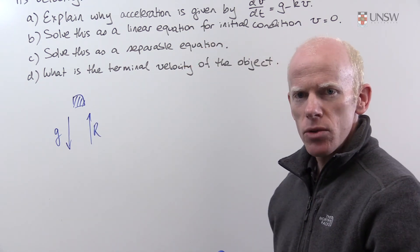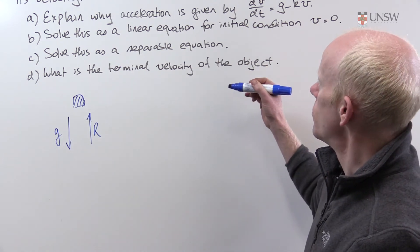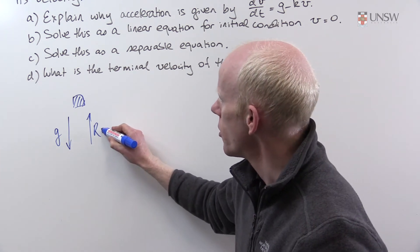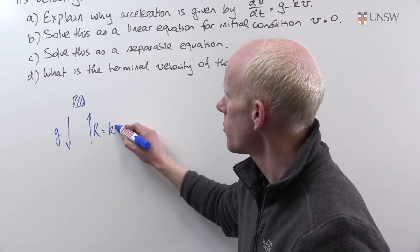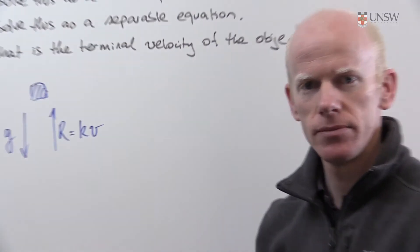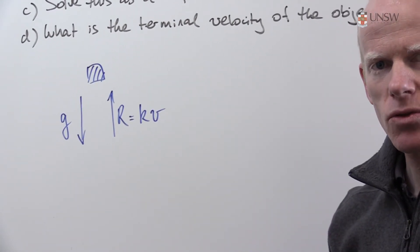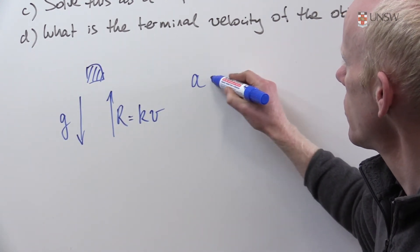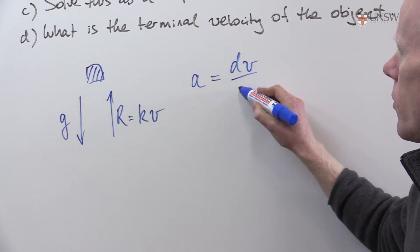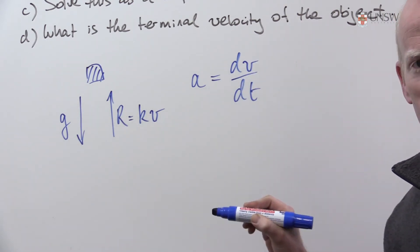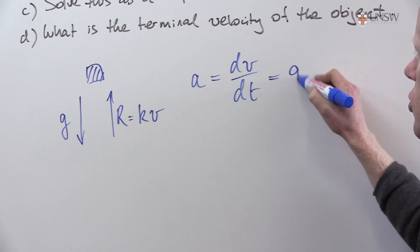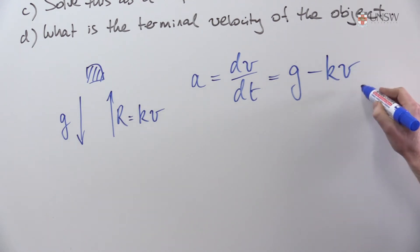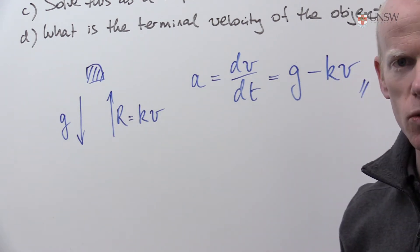In part A, the resistance is defined to be proportional to velocity, so we can define R to be some constant times v. Let's write the equation of the forces. We have the acceleration which is defined to be the rate of change of velocity with respect to time, which is equal to g minus k times v, which is what the question requires.